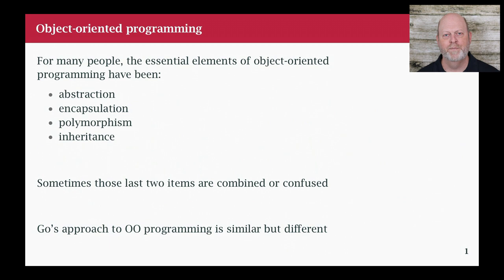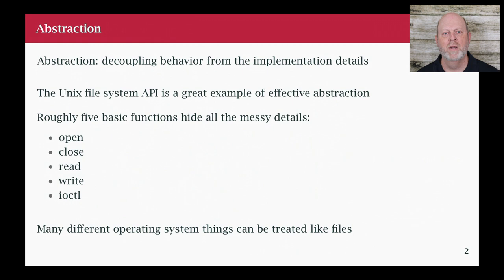Abstraction is pretty straightforward. It's a logical notion of how we make things simpler. The file system API is a great example — I want to open and read or write files, and I don't want to think about how the operating system buffers work, or how the file system works, or how it's all laid out on disk. I shouldn't need to know those things. So we abstract the notion of file from all of those underlying details.